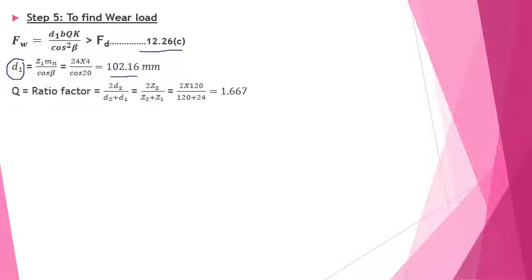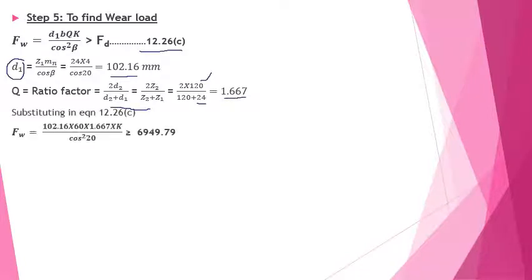The ratio factor Q is computed using Z1 = 24 and Z2 = 120, giving Q = 1.667. Substituting into the wear load equation and solving for K, we get K = 0.6031.